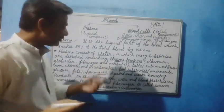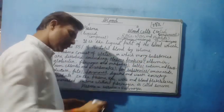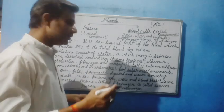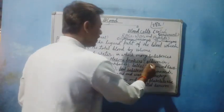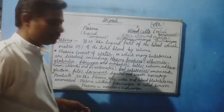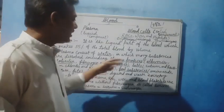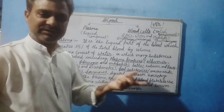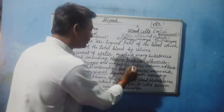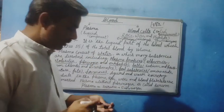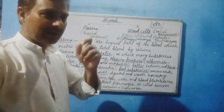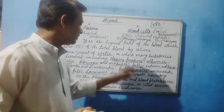Plasma consists of about 90% water, in which many substances are dissolved, including plasma proteins — basically 4 kinds of proteins: 1. Albumin, 2. Globulin, 3. Fibrinogen, and 4. Antibodies. About 90% is water, 6–7% is the plasma proteins. Other substances are salts — salt is also present in plasma, which is why blood tastes a little salty.